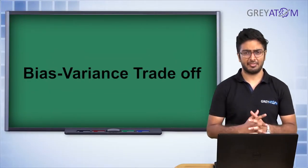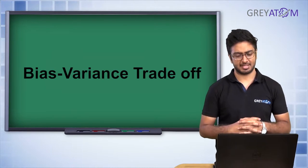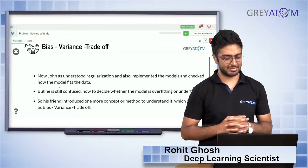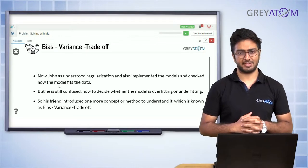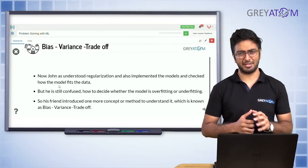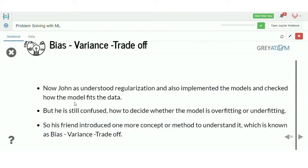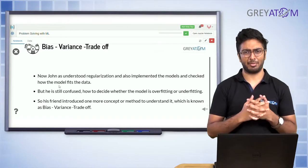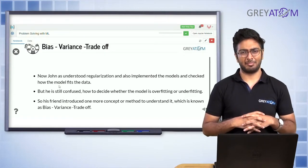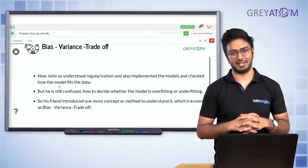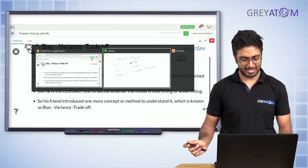Now let's understand the final part of this concept, which is bias-variance tradeoff. We understood the whole part about bias — how bad your model performs — but there's still the concept of variance which we are not clear about. So what is this concept of bias and variance?